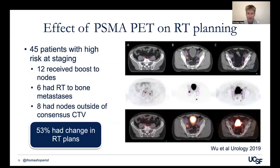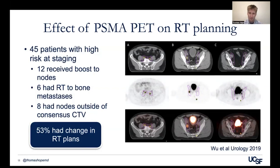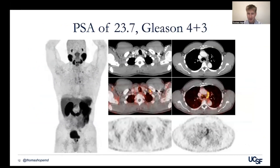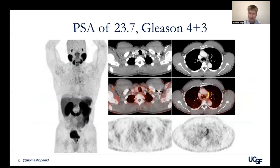This imaging at initial staging really does change management. For radiation therapy planning, seeing PSMA-positive nodes actually changed radiation therapy plans in over 50% of patients — that's remarkable. More importantly, consider a patient with Gleason 4+3 and a high PSA who was staged and found to have mediastinal disease as well as left supraclavicular uptake, which was biopsied and confirmed as prostate cancer. This patient would have undergone a prostatectomy, which would not have been clinically useful because he had metastatic disease.